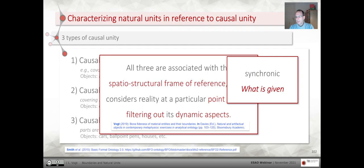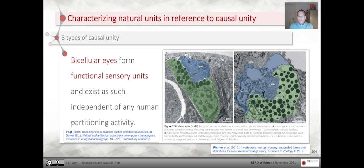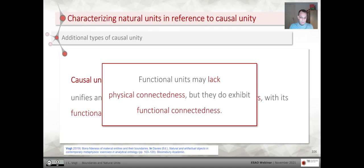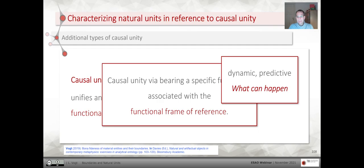This list of causal unities does not cover all types of natural units identified in the life sciences. For instance, bi-cellular eyes form functional sensory units that exist independently of human partitioning activities. So we suggested another type of causal unity: causal unity via bearing a specific function, which unifies an entity through the function it bears, with its functional component parts bearing subfunctions. Functional units may lack physical connectedness but do exhibit functional connectedness. This type of causal unity is associated with a functional frame of reference that's more dynamic, predictive, and about what can happen.